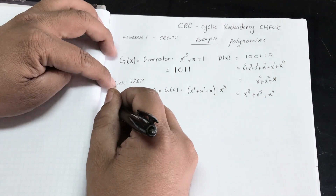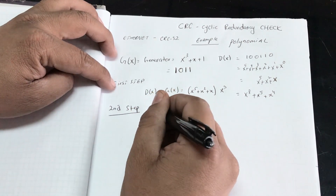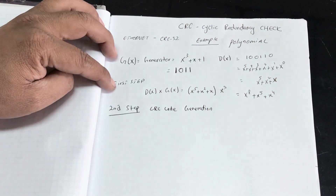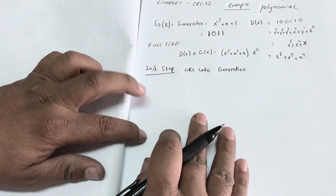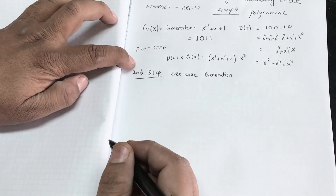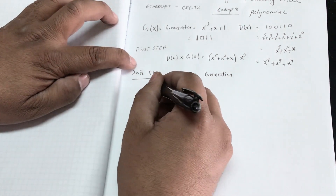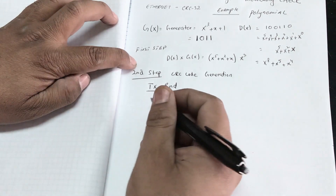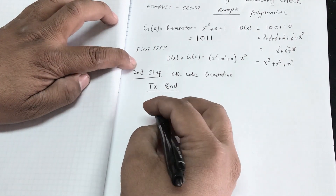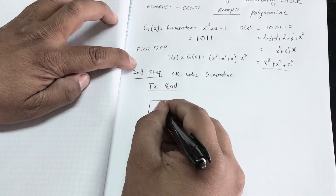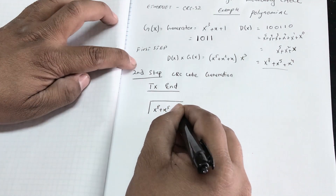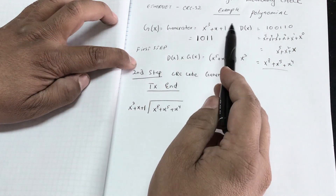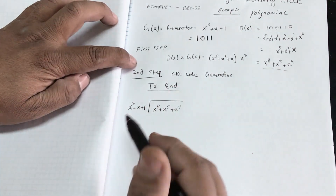The second step is CRC code generation, which happens at the transmitting end. We perform long division: take x⁸ + x⁵ + x⁴ and divide by the generator x³ + x + 1. To eliminate x⁸, we multiply the generator by x⁵, giving x⁸ + x⁶ + x⁵.